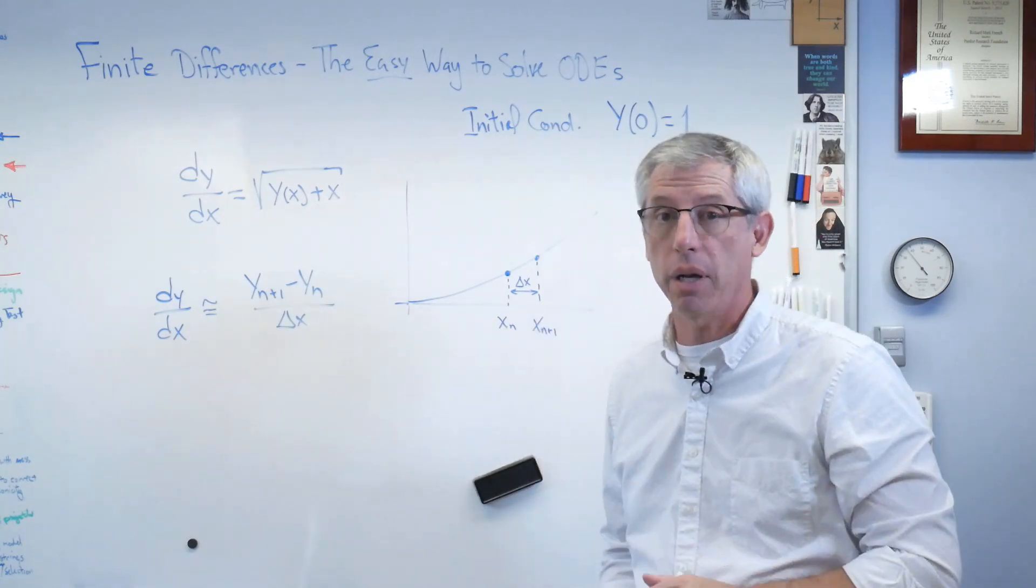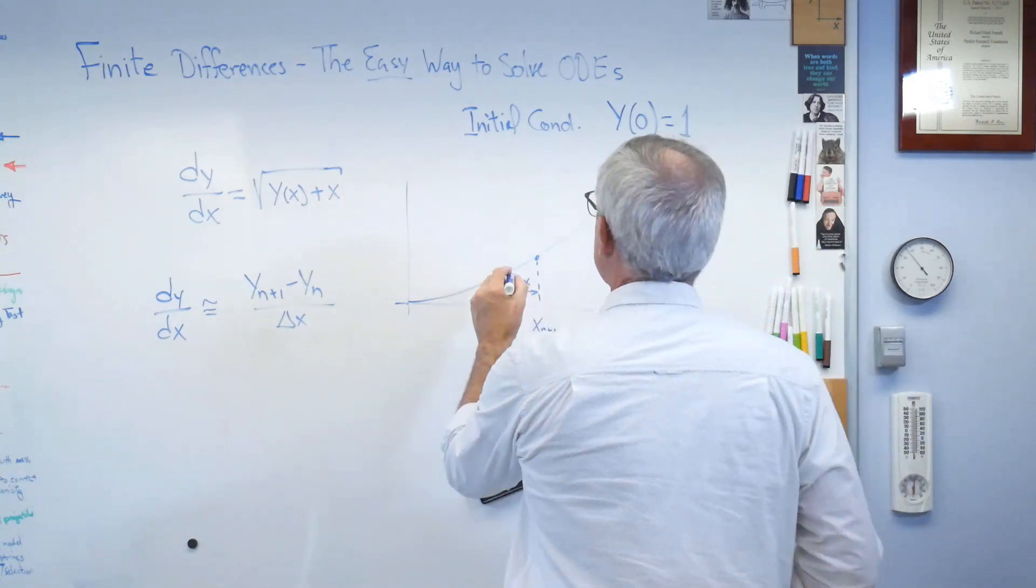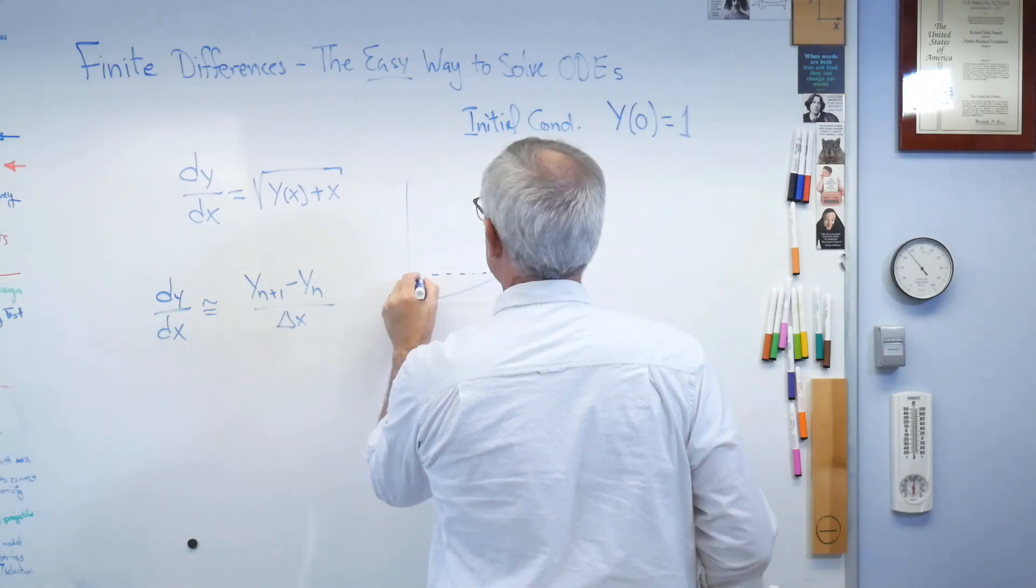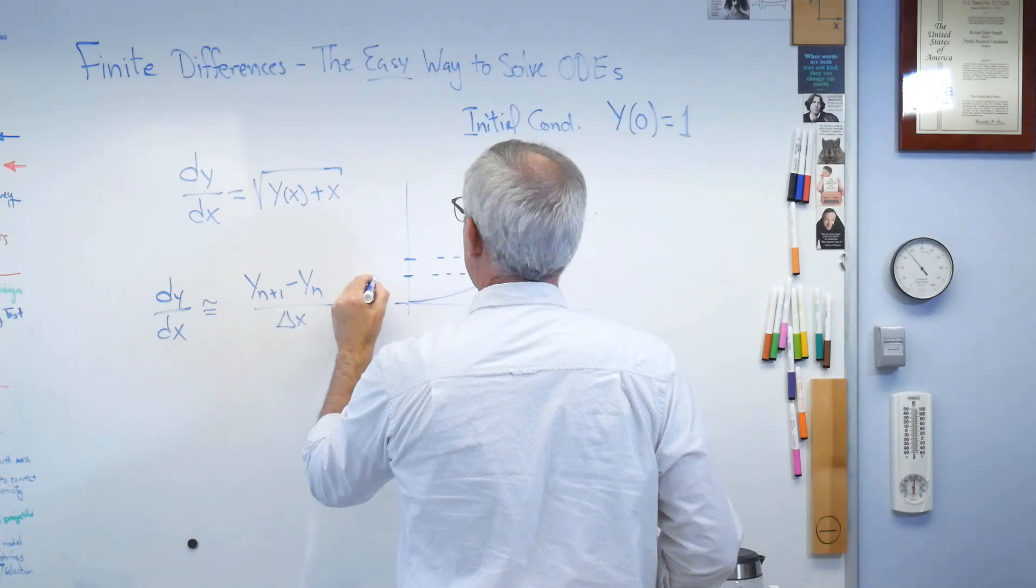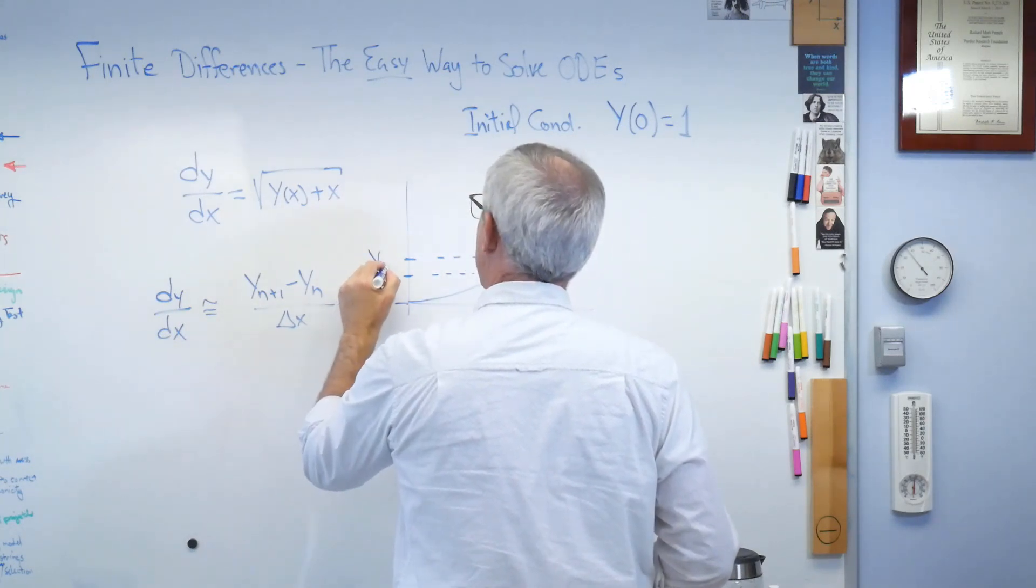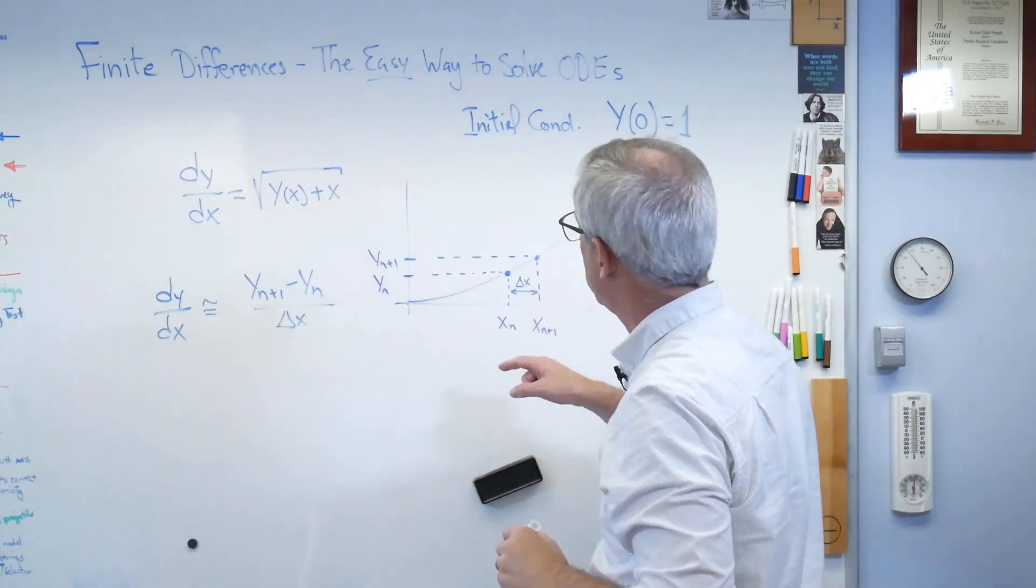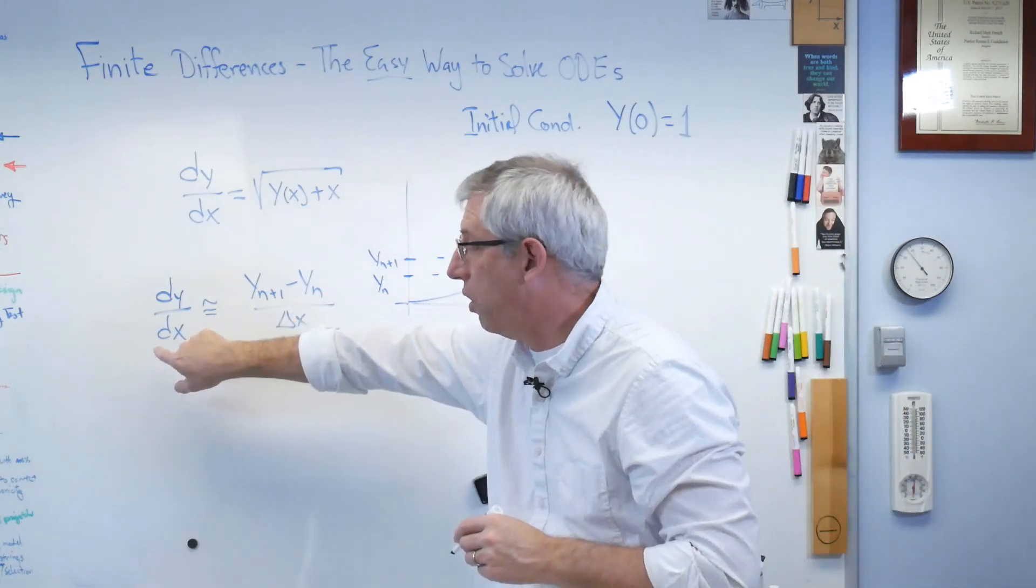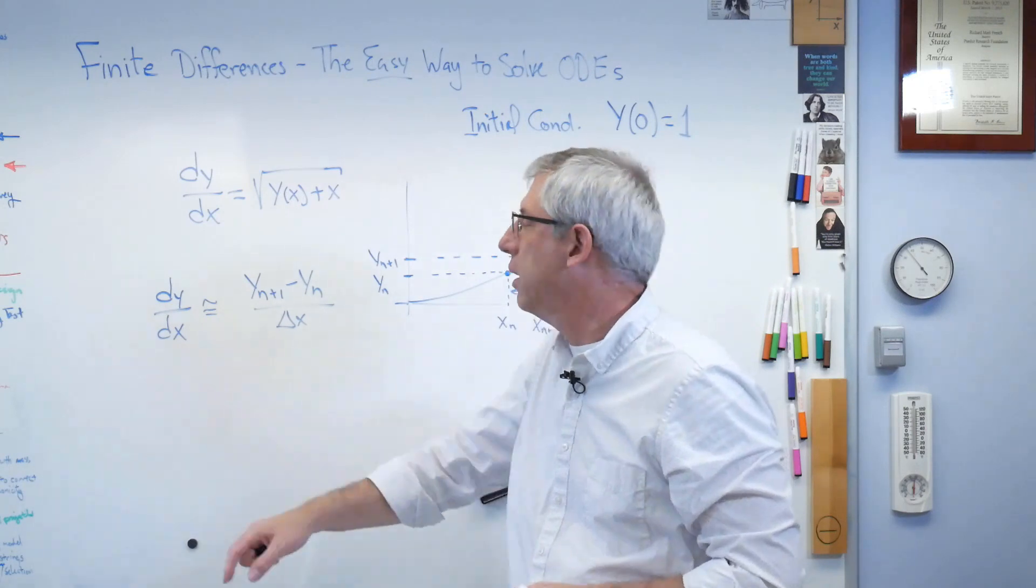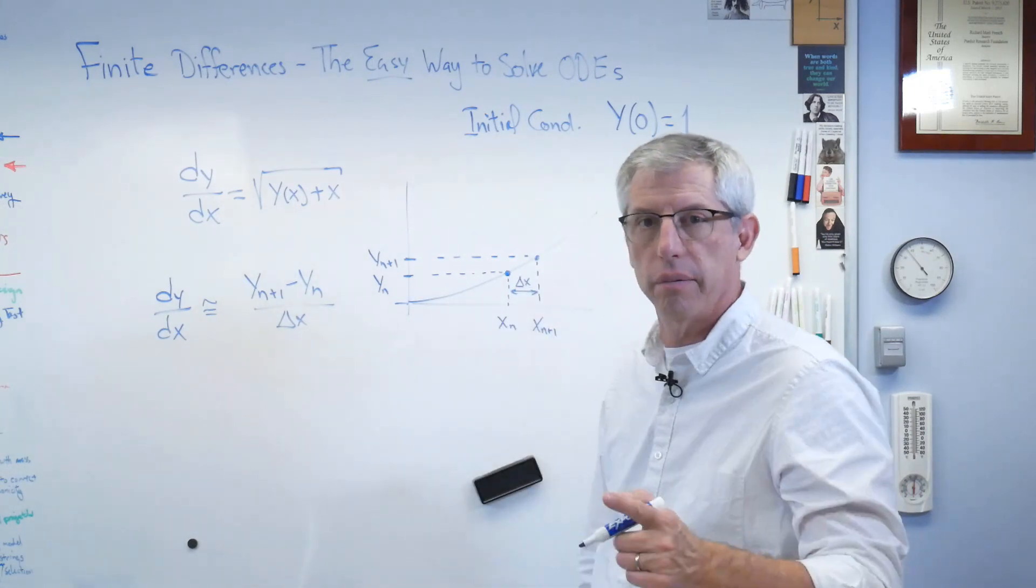I'm actually going to pick delta x. It's going to be a number, and I'm going to know what it is. All right. So it's not infinitesimal. It's an actual number. I've assigned it. I have a value for it. There's y of n, and there's y of n plus 1. So if that's small enough, this is close enough to this to work. Well, let's try it.